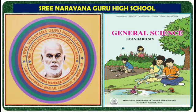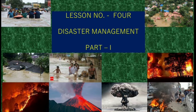Good morning children. Sri Naranguru High School welcomes all 600 children to the Science Online class. Now we are going to learn lesson number 4. The name of the lesson is Disaster Management. Children, look at the screen carefully.